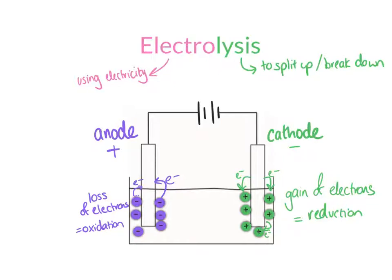Electrolysis is a way of splitting up compounds into individual elements. The anode is our positive electrode, the cathode is our negative electrode. At the anode, it will always be the non-metal that forms, because it is the anions that are attracted to it. At the cathode, it's our metal that forms, because metals are the cations. That's your recap of electrolysis.